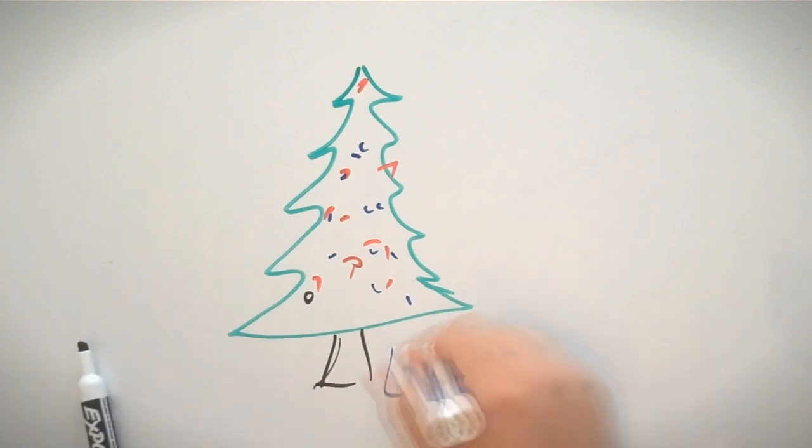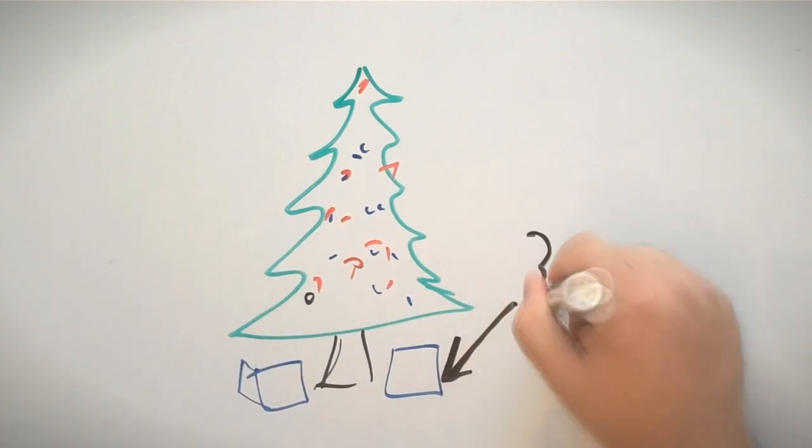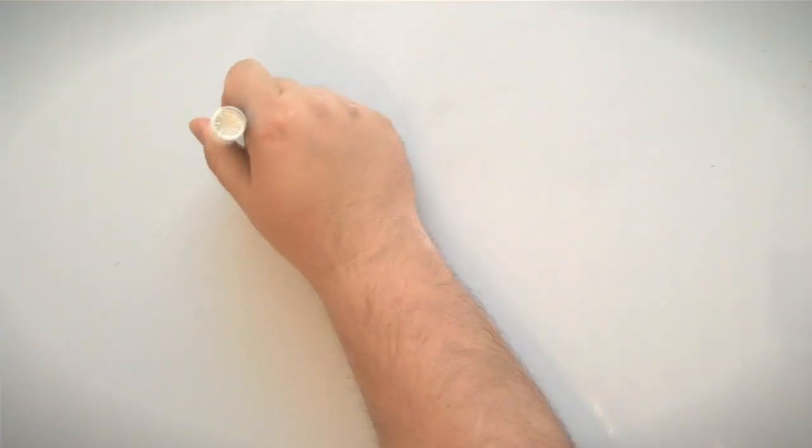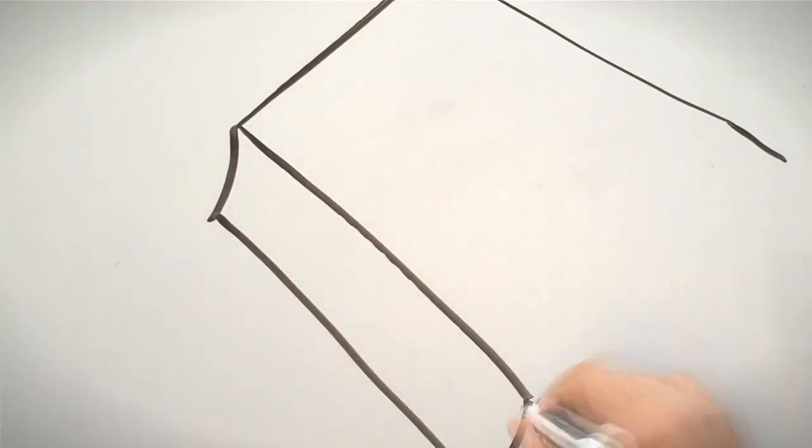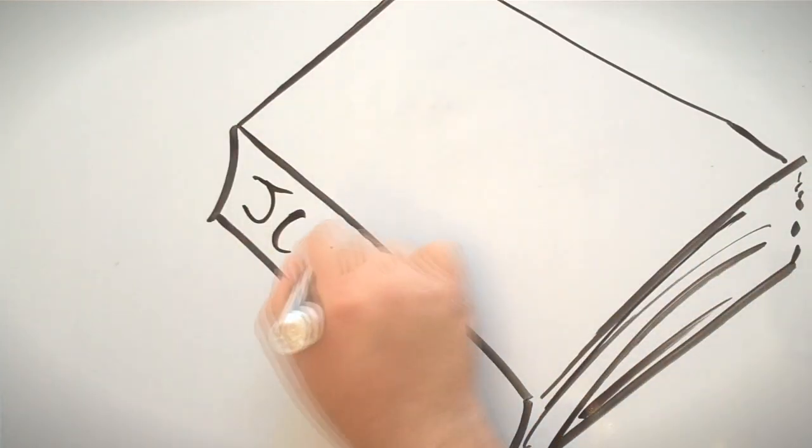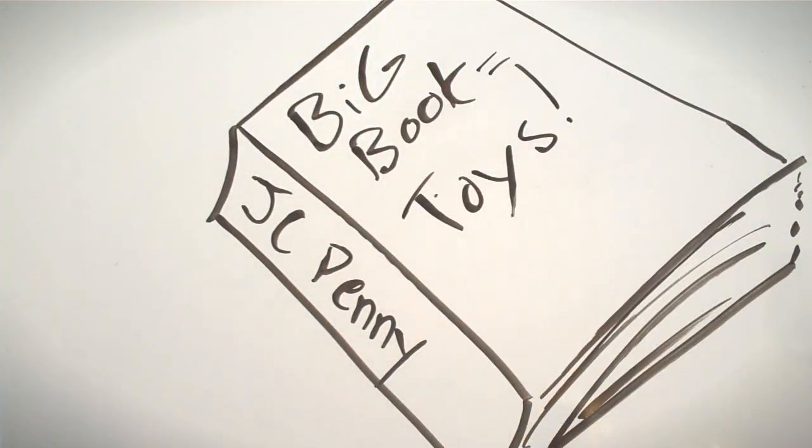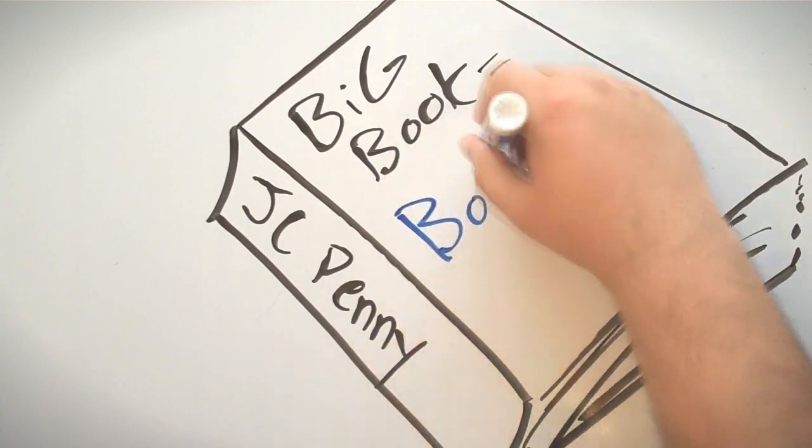So this is a Christmas tree and the reason I'm drawing this is because we used to pick out our presents from the JCPenney catalog when I was a kid. It was this huge book that had tons of stuff in it and a big toy section. But you know what I looked at? The boobs.